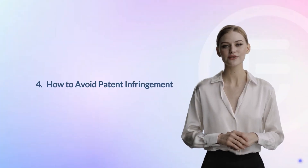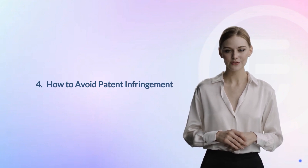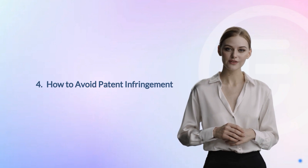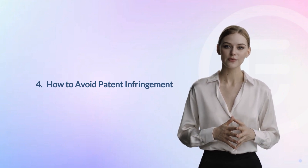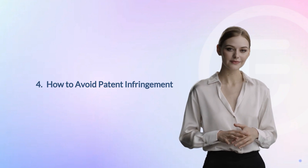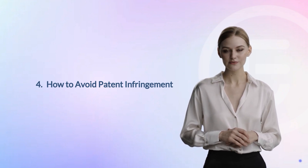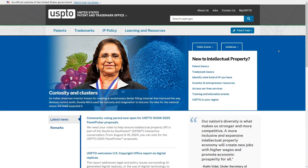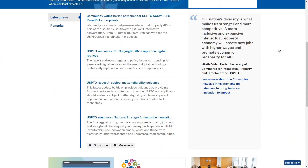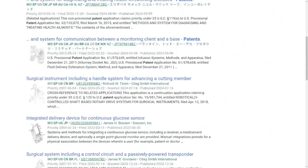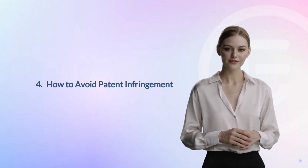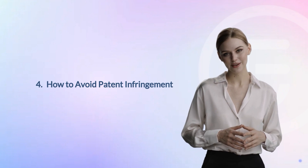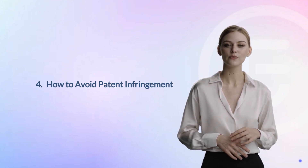After successfully navigating the steps for registering a patent, it's important to be vigilant about avoiding patent infringement. While securing your own intellectual property rights is crucial, ensuring that your innovations do not infringe on existing patents is essential to maintaining a compliant and sustainable business. The best way to avoid patent infringement is to conduct patent research at the product concept stage, giving you time to make changes to your innovations and weed out the risk of infringing existing patents. You can use the USPTO or Google Patent to access the patent database, or hire a patent attorney or researcher to do the research for you.